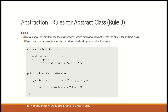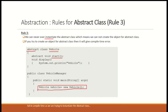Rule number three: abstract class cannot be instantiated — you cannot create an object of the abstract class because it is not a concrete class. If you try to do so, you will have a compilation error. For example, Vehicle is an abstract class because it has abstract methods, and if you try to create an object of the Vehicle class, you will get a compilation error.